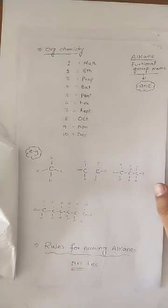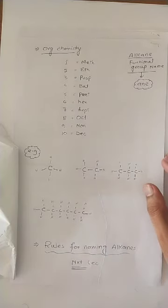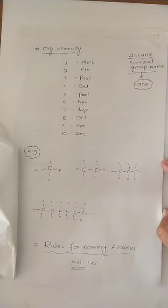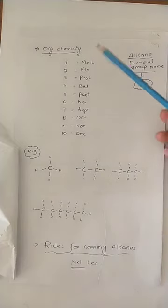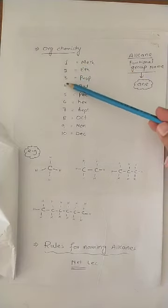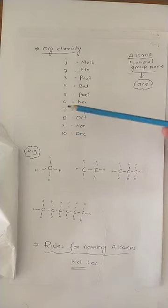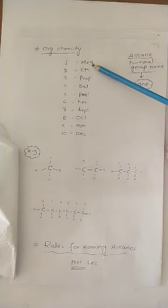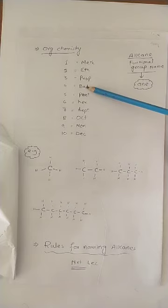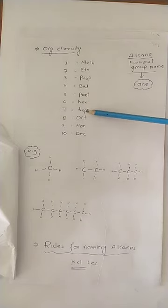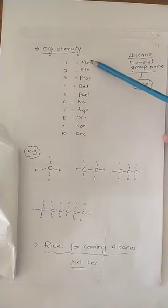Isi base pe organic compounds ke jo naam hote, inke naam ke parts hote hain. Organic chemistry mein kuch cheezein aap logo ko, aap saath yaad rakhni hain jo naming ke liye bohot important hai. Organic chemistry mein jaise hum bolte hain one, two, three, four, five, six, seven, eight, nine, ten - organic chemistry mein ke liye use hota hai meth, eth, prop, but, pent, hex, hept, oct, non, and dec.